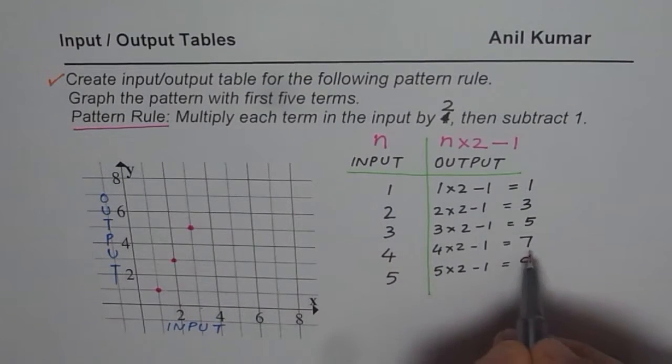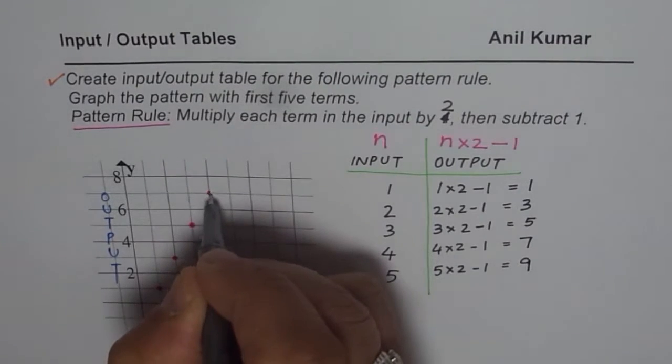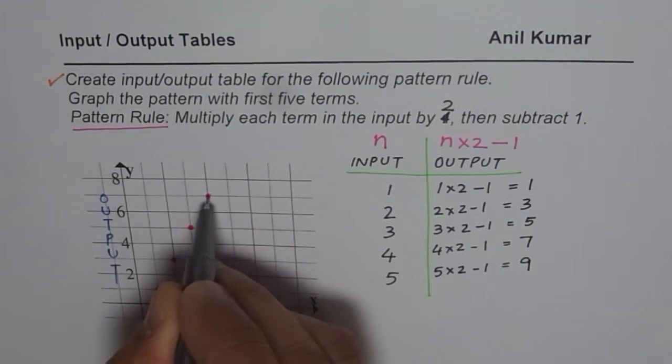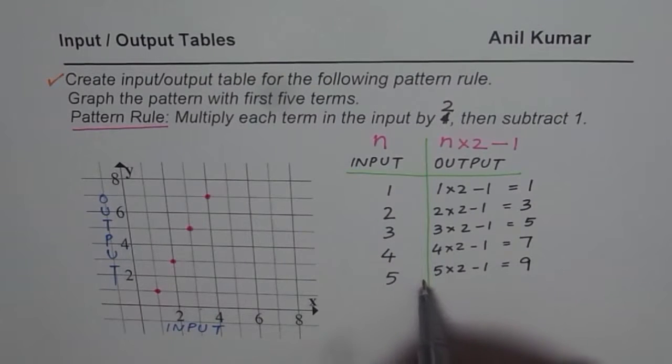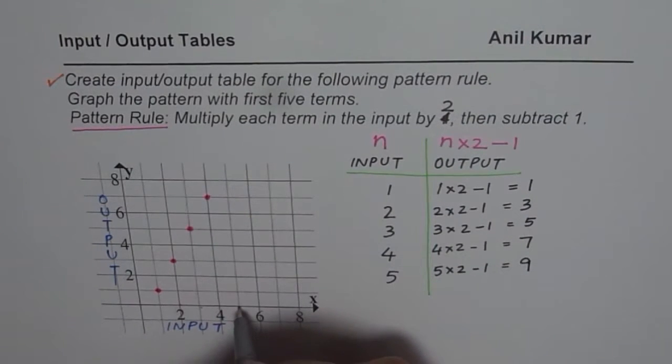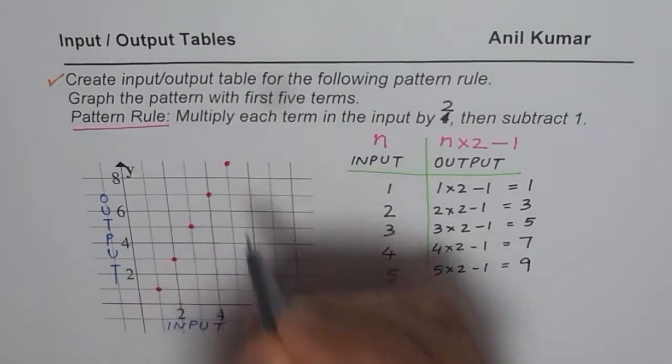4 is the input, 7 is the output. So basically if I go from 4 and connect with 7 as the output, we come to this corner. So that is the point we are interested in. Now we have 5 as the input, 9 as the output. So for 5, 9, this is 8, so 9 must be somewhere here. So I am just plotting this point.